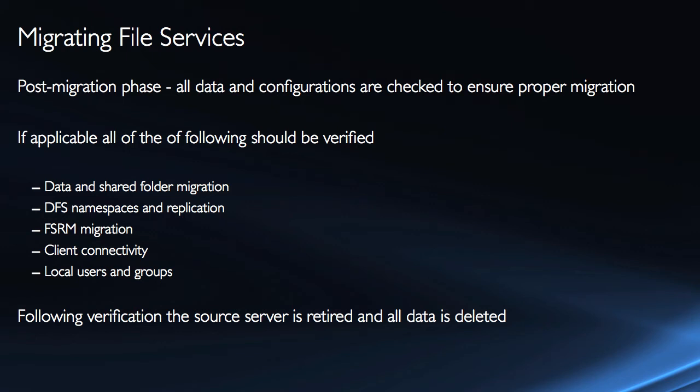For DFS namespaces, we need to verify that the namespace is now active on the destination server, that the logical hierarchy is accessible going through each individual folder. We can turn on access-based enumeration and ensure that's working properly. We need to verify replication using the DFS management console as well as DFS command line utilities, and also by looking at event viewer for warnings or error messages. With FSRM, open the file server resource manager on the destination machine to check report history, configuration, quota configuration, and file screens.